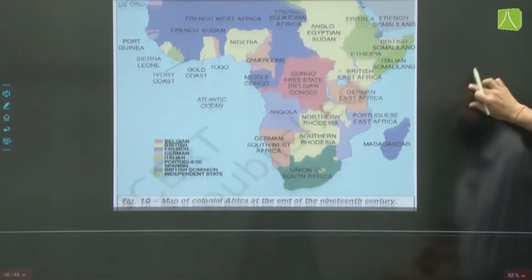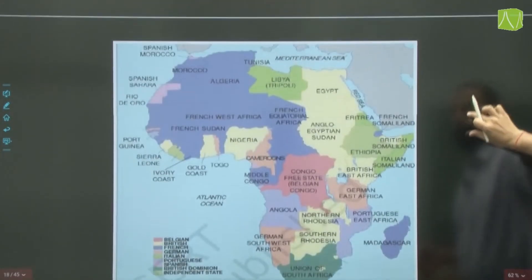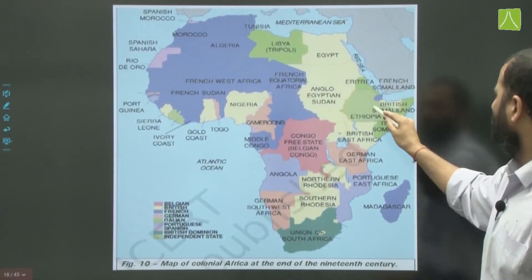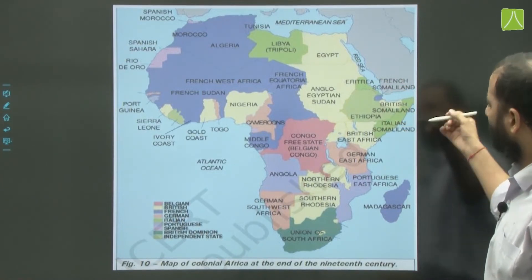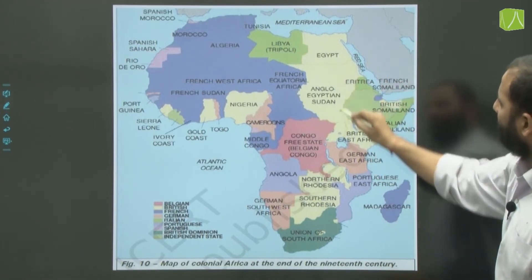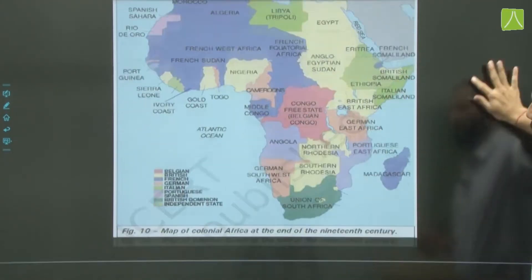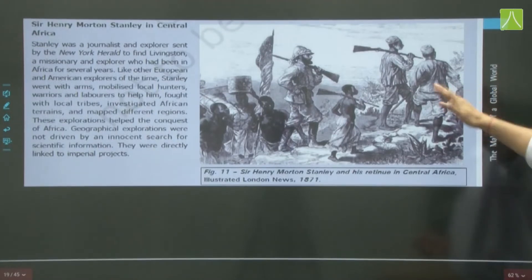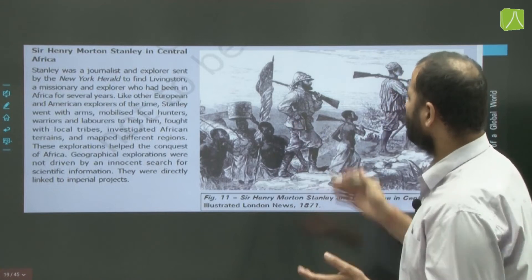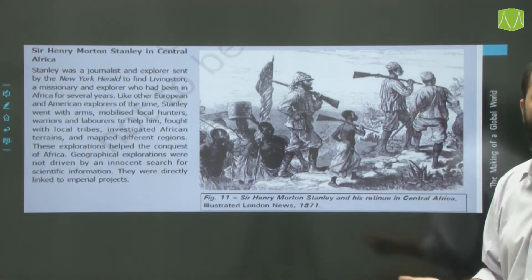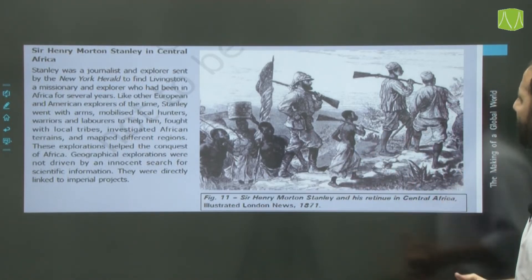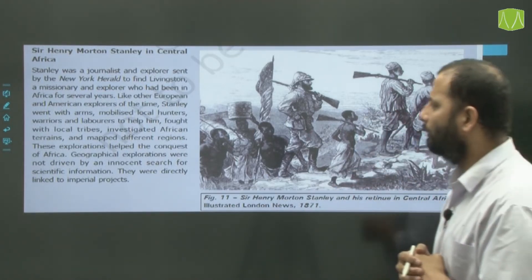The map of Africa shows almost straight boundary lines showing how the paper partition was done, dividing tribes like the Maasai — one group had to go to Tanzania and the other was left in Kenya. Sir Henry Morton Stanley was sent on explorations to map distant new lands being discovered with the help of local tribes.